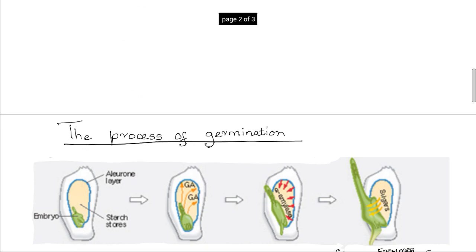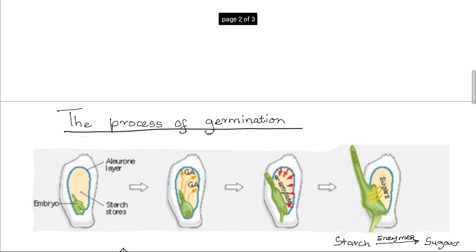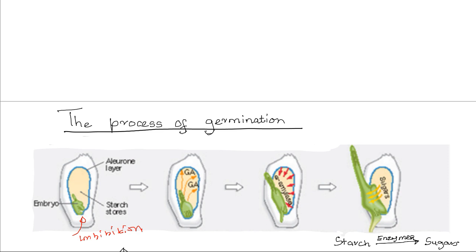Now we turn to the actual process of germination. The process begins with the intake of water by the seed, mainly through the micropyle — this process is known as imbibition. This intake of water leads to swelling of the endosperm and cotyledons, resulting in rupturing of the seed coat. The water also activates the hydrolytic enzymes and other enzymes.